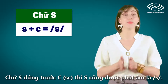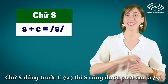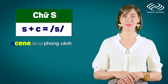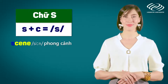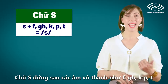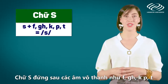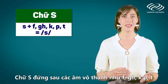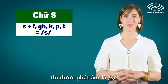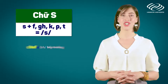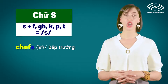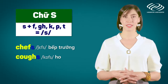When the letter S comes before C, it is also pronounced as /s/. For example: scene. The letter S, when it comes after voiceless sounds like F, G, H, K, P, or T, is also pronounced as /s/. For example: chefs, cuffs.